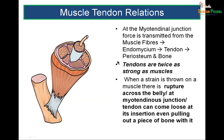What is the relationship between muscle and tendon? At the myotendinous junction, forces get transmitted from the muscle fiber through the endomysium to the tendon and then to the bone. Always remember: tendons are twice as strong as muscles. So when strain is thrown on a muscle, what will rupture is not the tendon but the belly, or the myotendinous junction could tear, or the tendon could pull out a piece of bone with it.